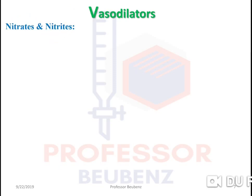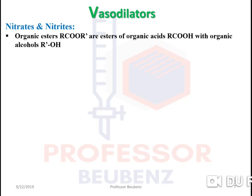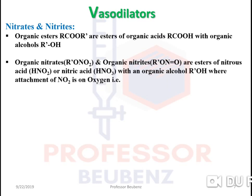Starting with vasodilators — nitrates and nitrites. Organic esters are esters of organic acids with organic alcohols. Organic nitrates contain -ONO₂ and organic nitrites contain -ONO (one oxygen less). These are esters of nitrous acid (HNO₂) or nitric acid (HNO₃) with an organic alcohol (ROH), where the attachment of NO₂ is on oxygen.